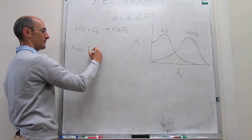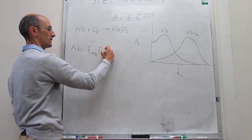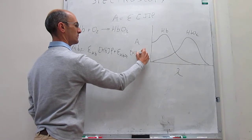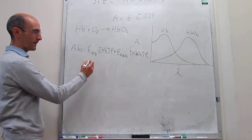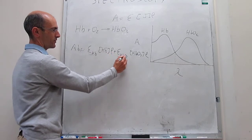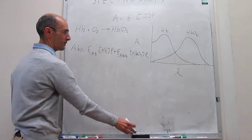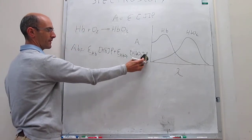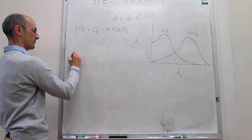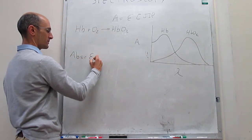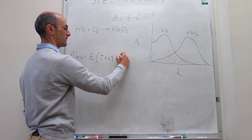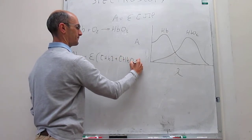The total absorbance will be simply the sum of the term for hemoglobin and a similar term for oxyhemoglobin: epsilon of Hb times the molar concentration of Hb times path length, plus epsilon of HbO₂ times the molar concentration of HbO₂ times path length. Now the interesting thing is that if you're doing the experiments right at the isosbestic wavelength, those two epsilon terms are actually exactly the same — call it epsilon — so you can factor out epsilon and path length, and the expression simply becomes: absorbance equals epsilon times the sum of the concentration of Hb plus the concentration of HbO₂, times path length.